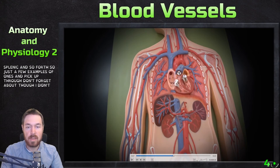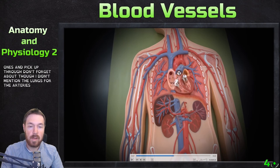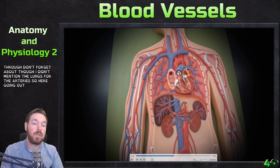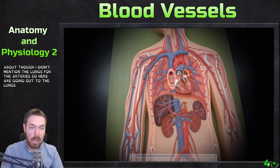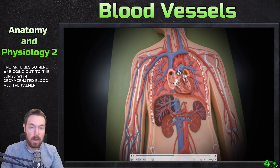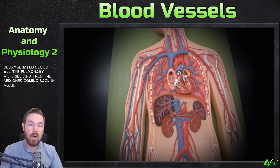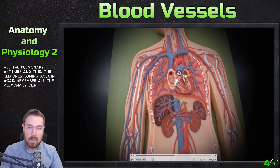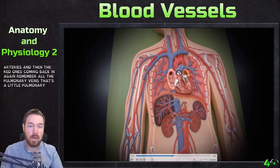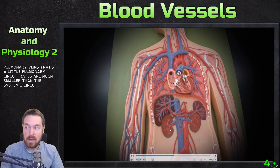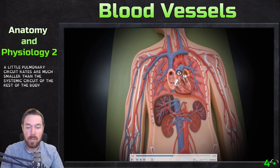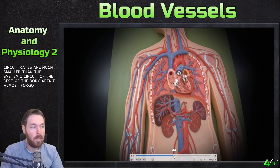I didn't mention the lungs for the arteries — going out to the lungs with deoxygenated blood are the pulmonary arteries, and the red ones coming back in are the pulmonary veins. That's the pulmonary circuit, much smaller than the systemic circuit of the rest of the body.